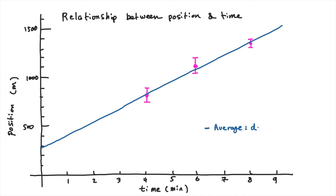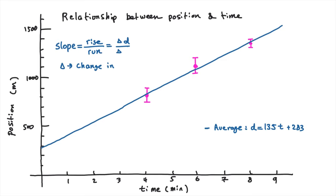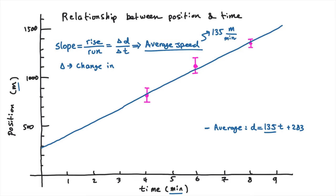Since the equation was y = 135x + 283, they changed y to d for position and x to t for time, giving d = 135t + 283. Baba noted that the slope is rise over run — the rise represents change in position and the run represents change in time. Negda added that dividing the change in position by the change in time gives the average speed. Robo asked if the slope represents the average speed, meaning Anna's average speed was approximately 135 meters per minute, and Mr. S agreed.